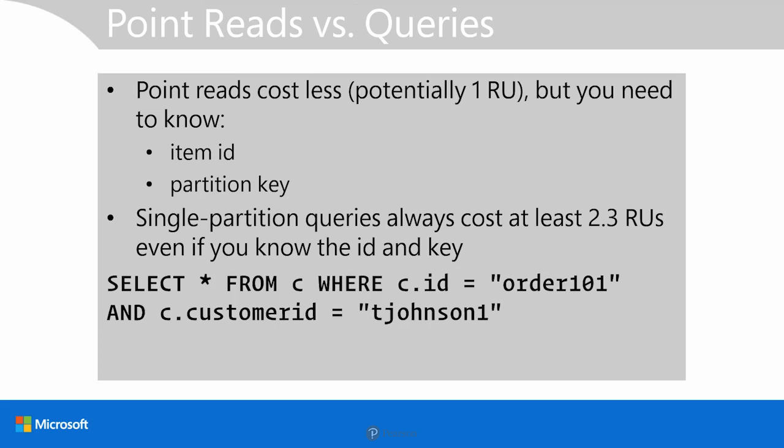And here is a sample SELECT statement where we're just bringing some row filtering with a complex WHERE clause — WHERE and AND. Pretty straightforward. But because we're not specifying the document's ID and the partition key, this is going to be a more expensive operation than a point read, because we're going to have to take advantage of custom indexing if we've created one, or just rely upon Cosmos' default indexing policy to find the correct physical and logical partition to satisfy the query results.